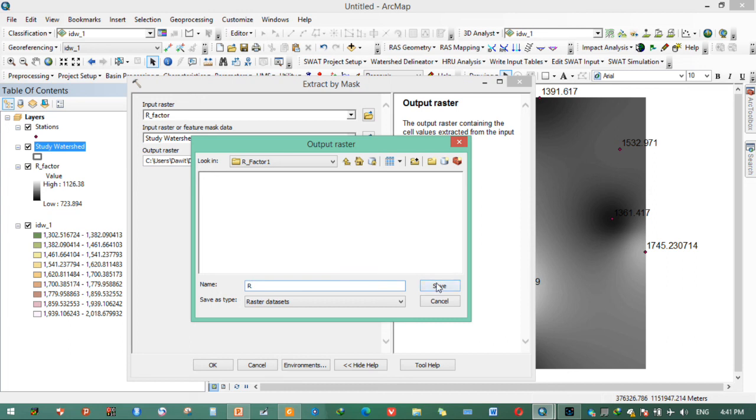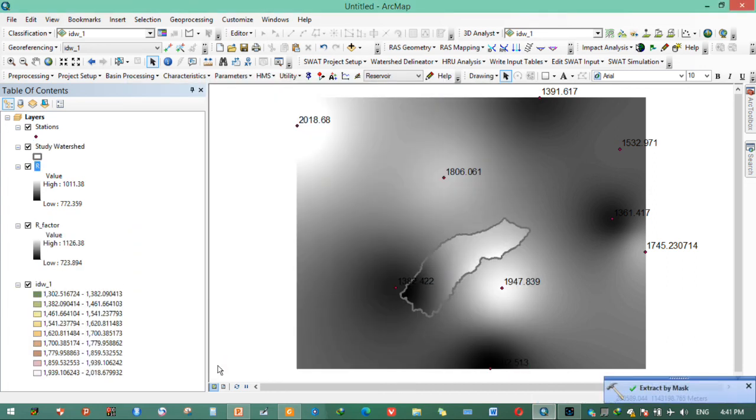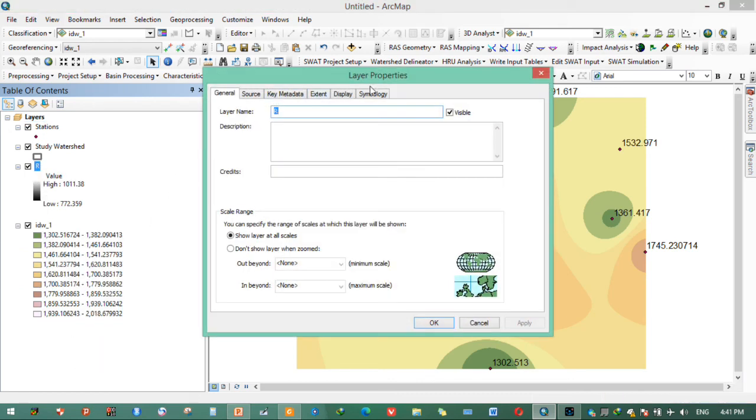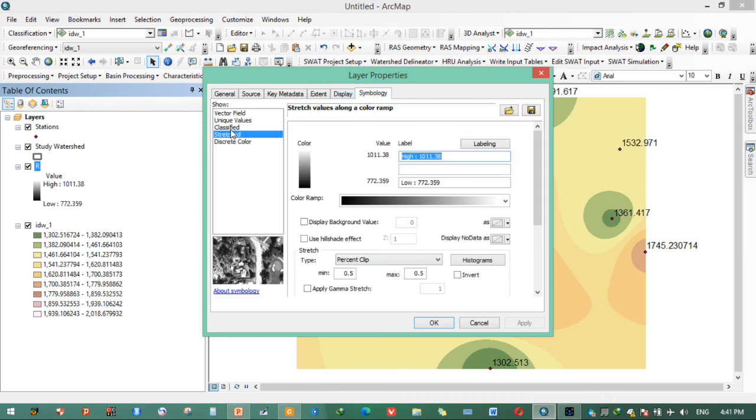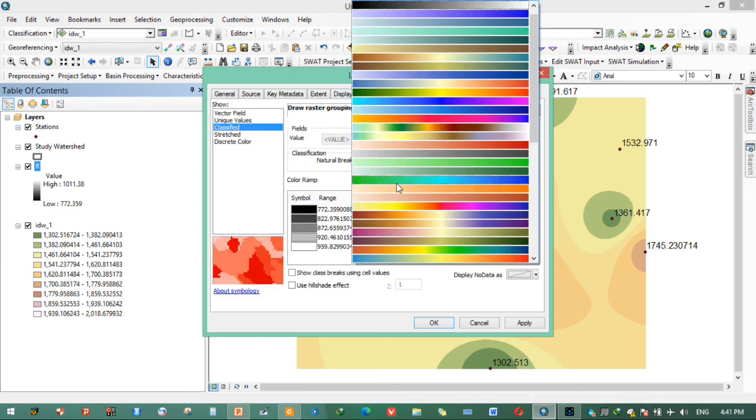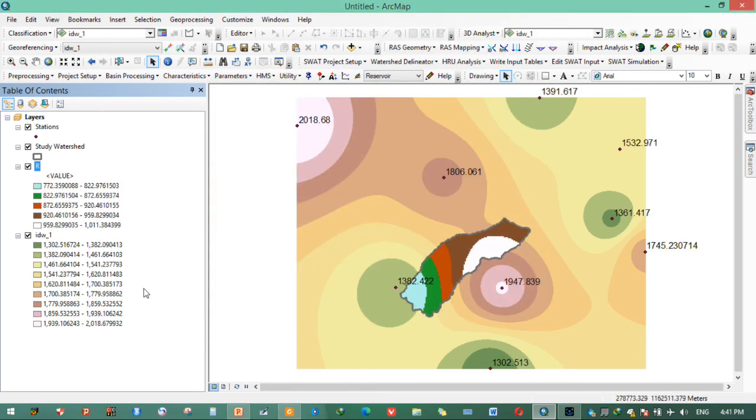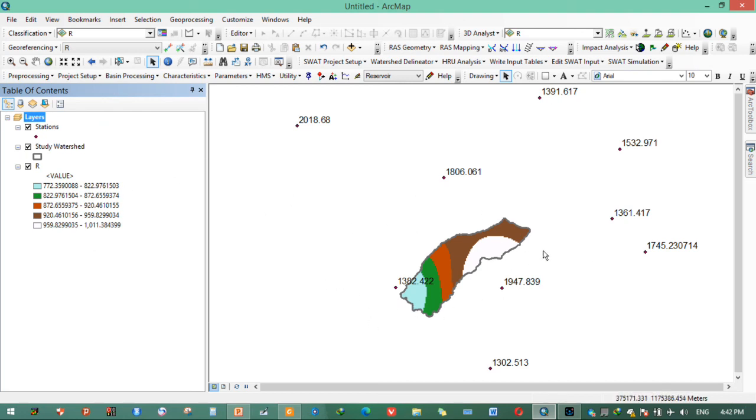Okay, we have extracted R factor. Remove the rest. Properties, here as you can see, you can symbolize, classify the value. Apply. This is our R factor value.